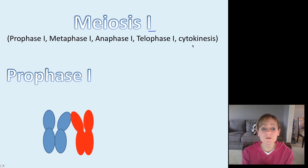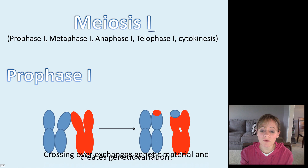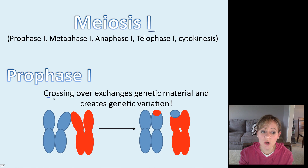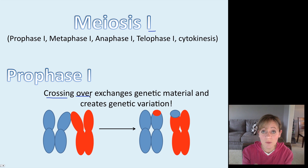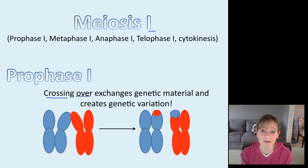Starting with prophase I — I'm just going to show one pair of homologous chromosomes. Something very important happens during prophase I: an event called crossing over occurs. Crossing over is going to exchange genetic material between the maternal chromosome and the paternal chromosome. So alleles from mom are now actually on the paternal chromosome and likewise paternal alleles move to the maternal chromosome. This is really important in creating genetic variation.